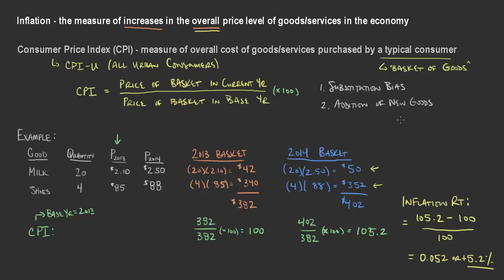That new type of good gives your dollars more options and more opportunity to be used where you prefer. It gives you, in essence, more substitution — more options. So these two problems are connected in a way. There's a third thing also connected to these, which is quality change.